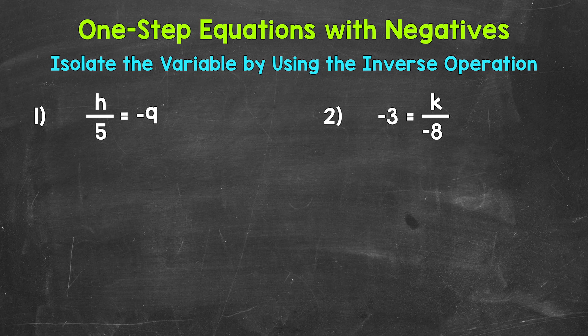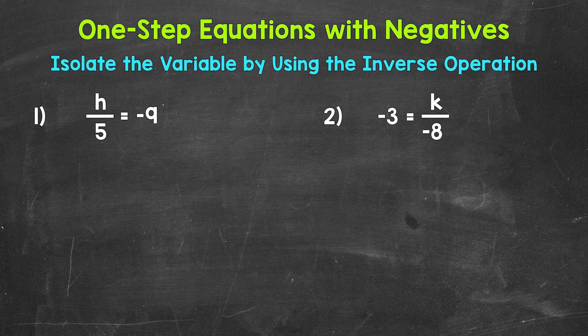When we solve one-step equations with negatives, we solve them the same way we solve one-step equations that have only positives. We want to isolate the variable, which means get it by itself, and we do this by using the inverse operation, which means the opposite operation. Basically, we want to undo whatever is being done to the variable so the variable is by itself on one side of the equation. Just remember, whatever is done to one side of the equation, it must be done to the other in order to keep everything balanced and equal.